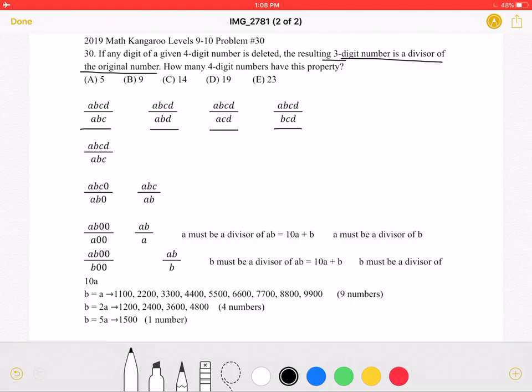So let's start with ABCD divided by ABC. We know ABC must go into ABCD perfectly. So let's write this.